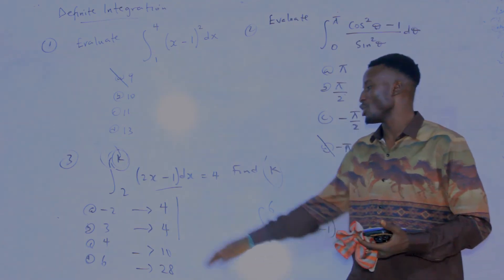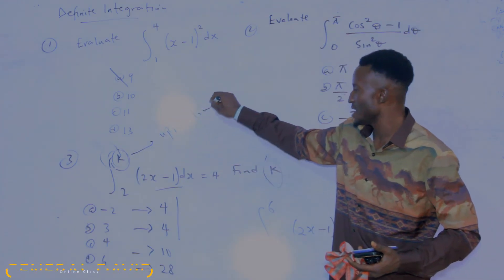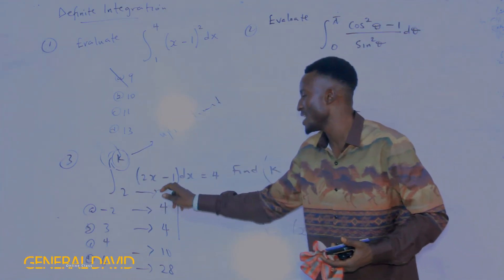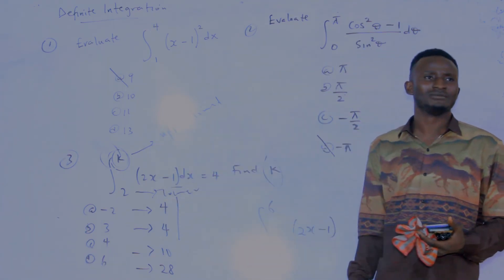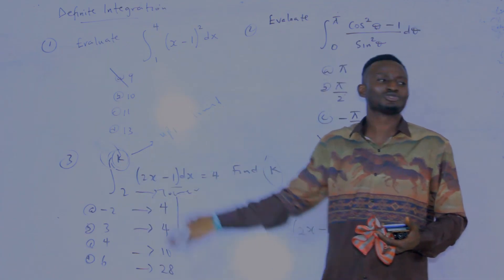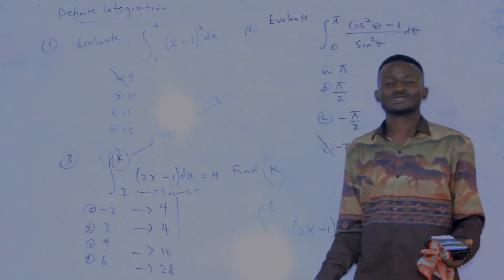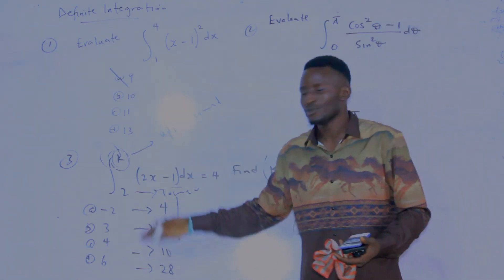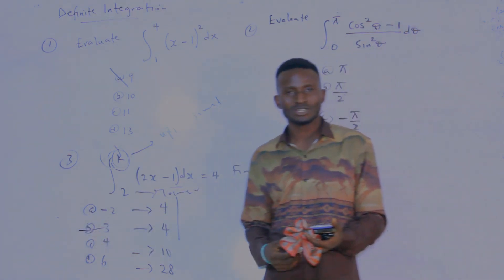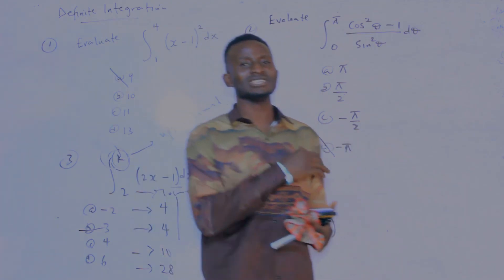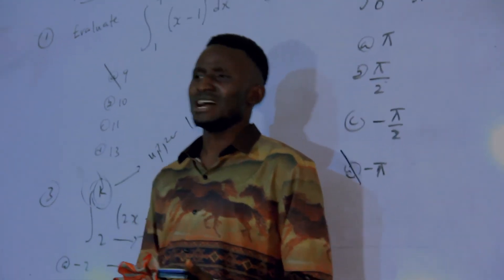Option B is the correct answer. Here is why: k is at the upper limit and 2 is at the lower limit. The upper limit must always be greater than the lower limit. Option A is minus 2, which is less than 2 — so it cannot be the upper limit. Option B is 3, which is greater than 2, so option B is the correct answer.